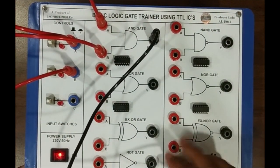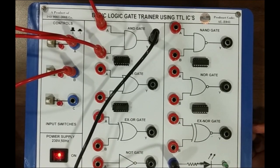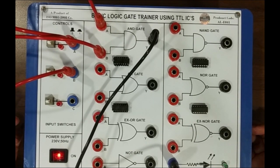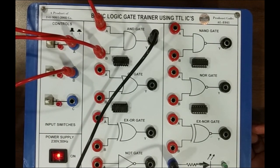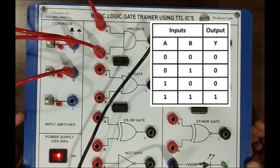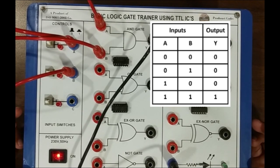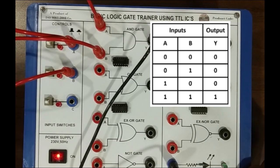We connect the output to one of the LEDs. This LED will indicate the output — when it goes high it will indicate high. Here we have switches which give a signal of either zero or one. When it is zero, this red LED will not glow, but when it is one, the LED will glow. In case of AND gate, output is high in only one condition: when both inputs are at high level. Currently it is zero, zero, so output is zero.